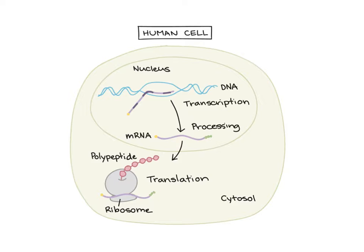Transcription copies the gene onto a piece of RNA, which we call mRNA — messenger RNA — and that mRNA is able to leave the nucleus. It's going to leave through a little opening called a pore, go find a ribosome, and begin the process of translation. Translation is what actually makes a protein.